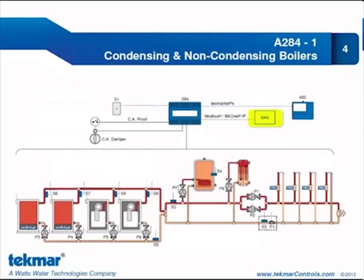We have attached the 284 to a building automation system, communicating with either Modbus or BACnet IP — it's one or the other, we can't do both. We are also connected to a gateway 483, communicating certain information using the TECMARnet 4 communication. We have connected an outdoor sensor to provide a reset water temperature for the space heating zones. We're also controlling a combustion air damper, using its end switch to provide combustion air proof to the 284. This is optional — we can control the combustion air damper without proof, but if configured for proof, we will not operate the heating plant until proof is received.